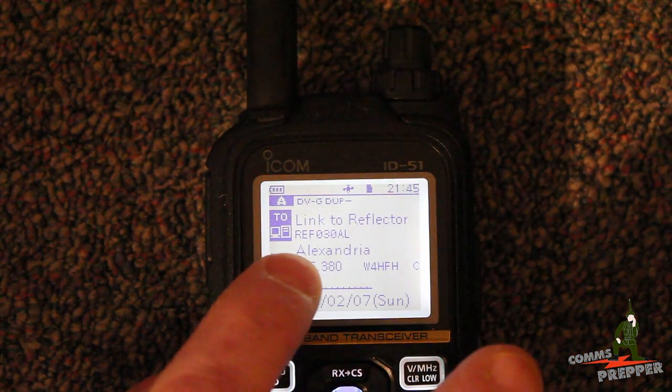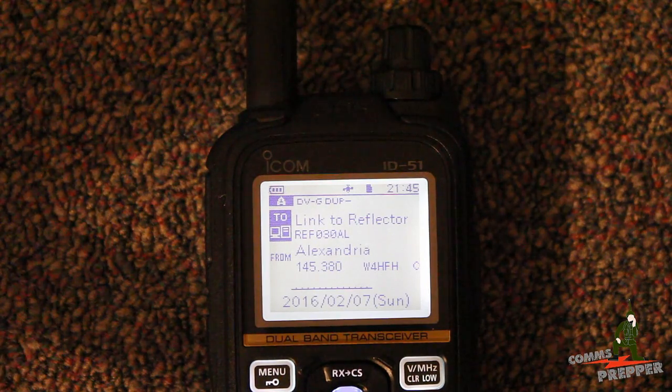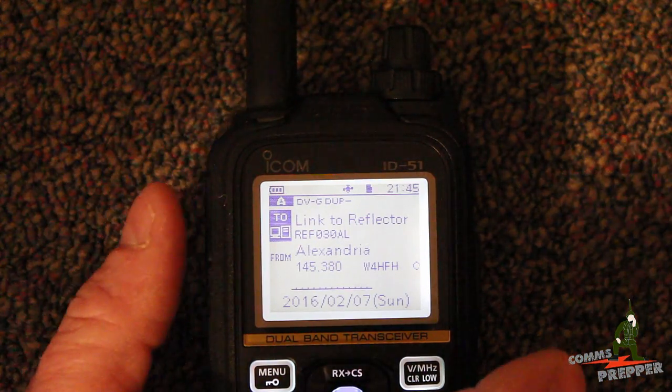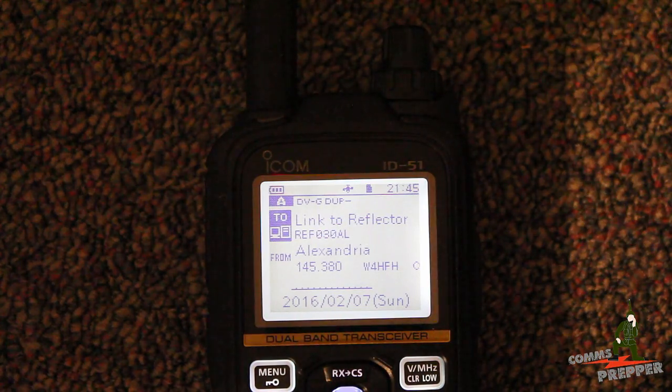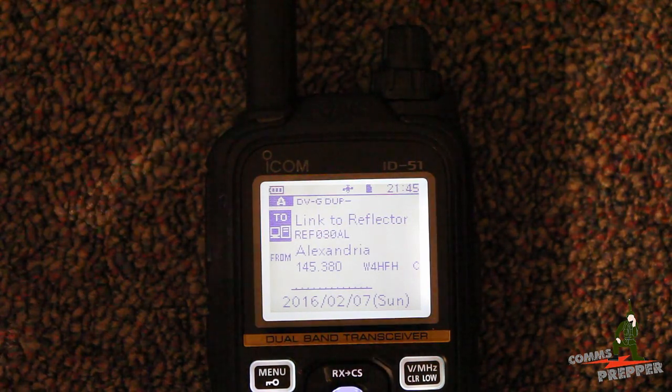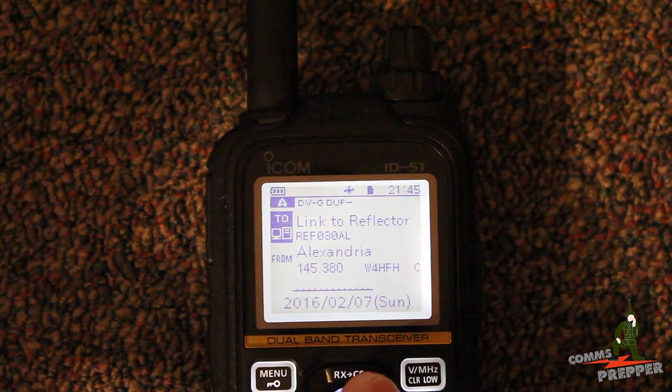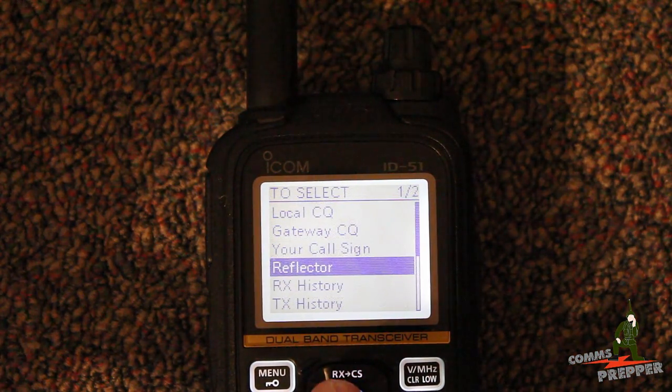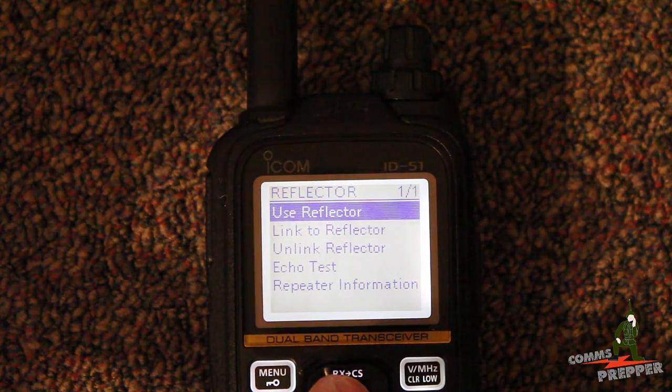So now you can see here in my UR line, it's REF030AL. This would set up the link. Now if I were to hit the push to talk here and hit that system, this would create a link between my repeater and that reflector. Let's assume that we did that because we're not going to transmit to get on the air. Now I can come over here to reflector and go use a reflector.